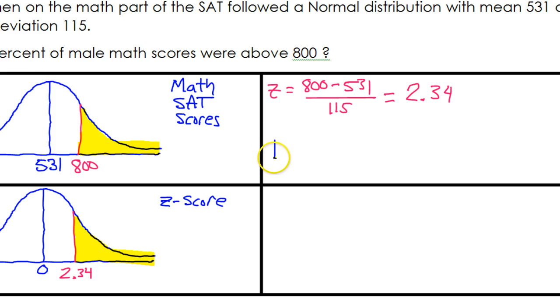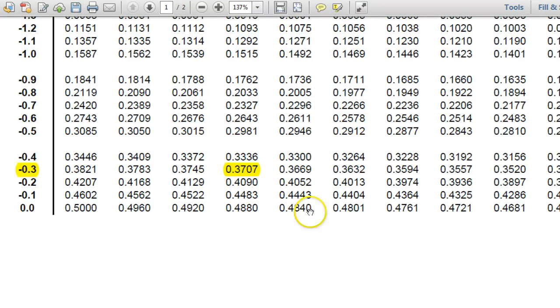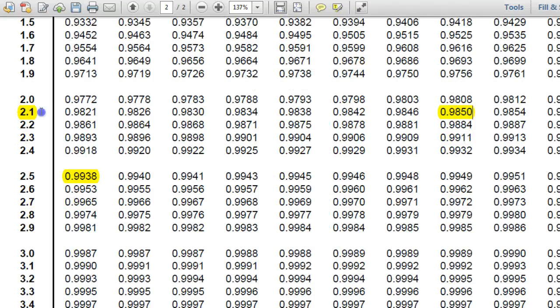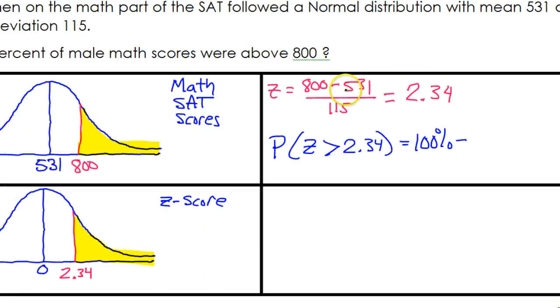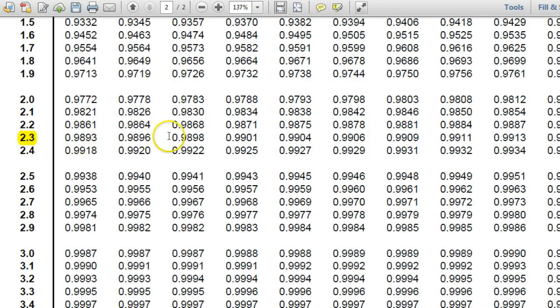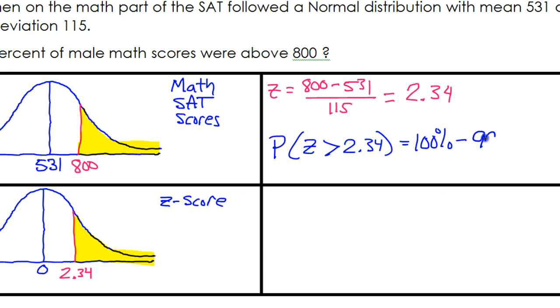So we are looking for the percentage of z-scores that are greater than 2.34. When we want greater than, we must subtract from 100%. So let's find the percentage of values that are below 2.34 and we'll subtract that from 100. All of these are below values, so start with the 2.3 part. So here's 2.3 right here. Now we're supposed to do 2.34. So for the 4, we have to go over to the fourth column. That is 99.04%.